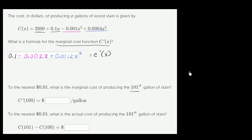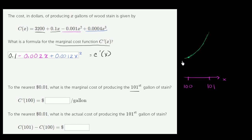Let's say this is our x-axis: here is 100 gallons and the next gallon is 101 gallons. Our cost function might look something like this. When you calculate c prime of 100, it gives you the slope of the tangent line at that point — that slope is equal to c prime of 100.